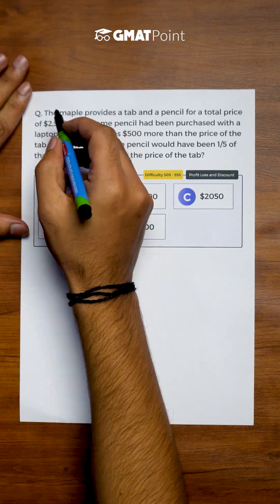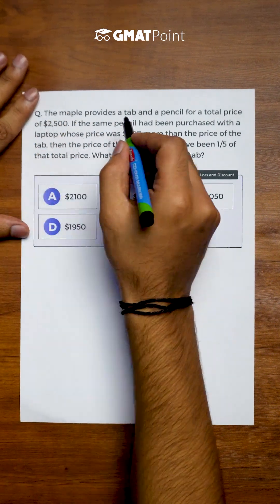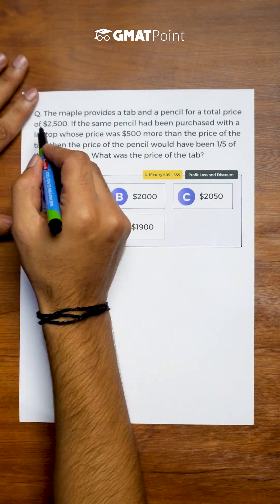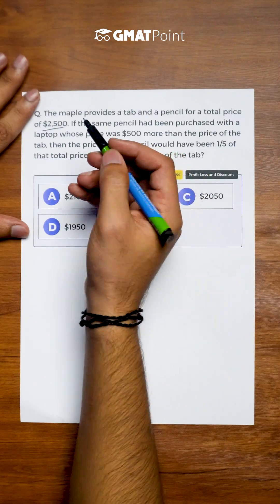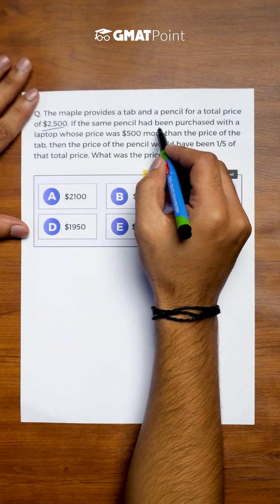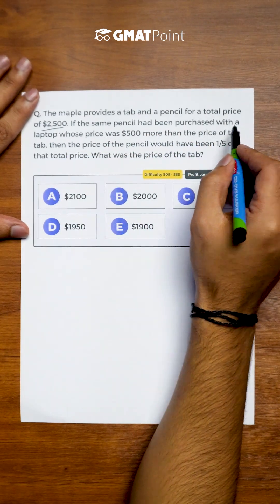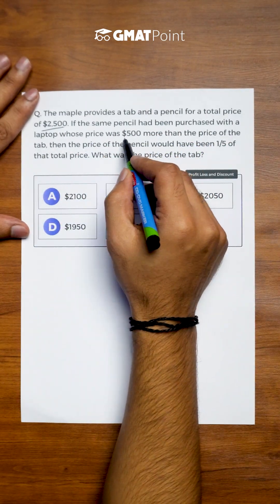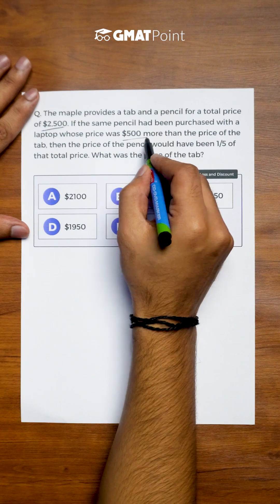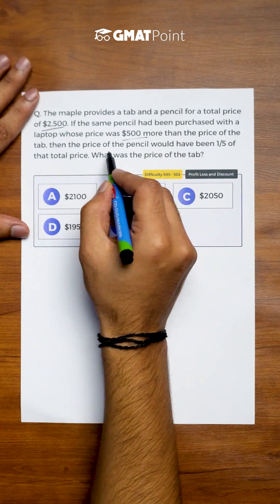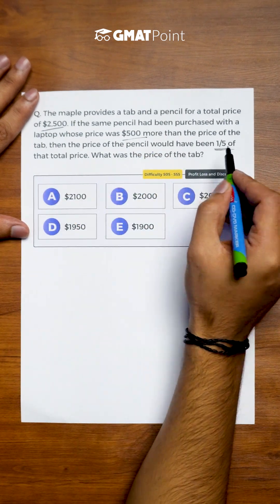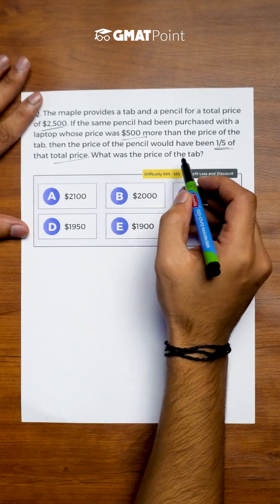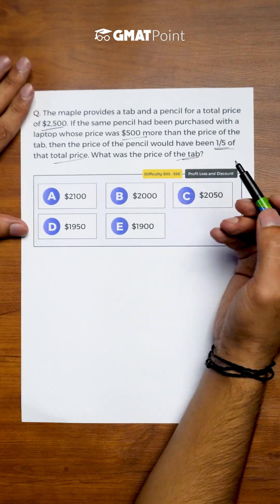Let us see how to solve this question. A store provides a tab and a pencil for a total price of 2500 dollars. If the same pencil had been purchased with a laptop whose price was 500 more than the price of the tab, then the price of the pencil would have been 1/5th of the total price. What is the price of the tab?